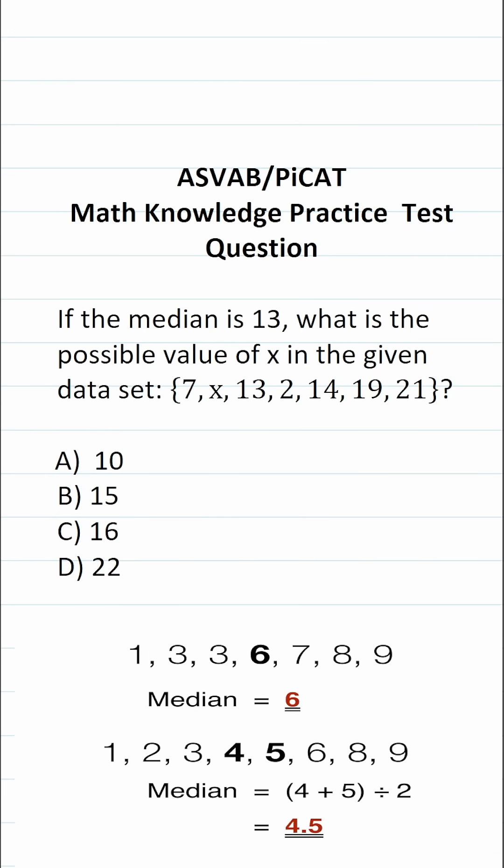This math knowledge practice test question for the ASVAB and PiCAT says, if the median is 13, what is the possible value of x in the given data set? 7, x, 13, 2, 14, 19, and 21.